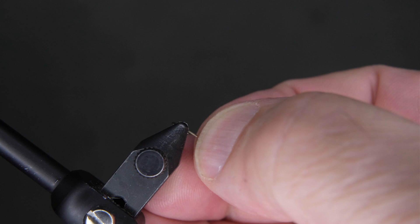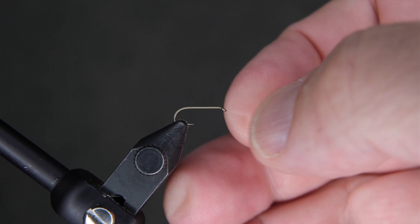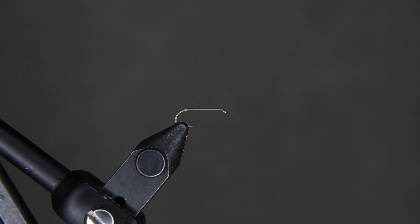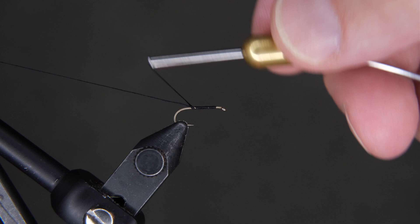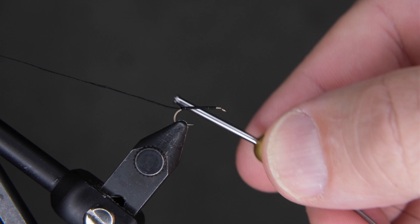Once you get your hook ready, we're going to mash the barb and get it secured firmly in your vice. Once that's done, take your thread and we're just going to tie on here. Wrap three or four times to the right and then back over the top of it.